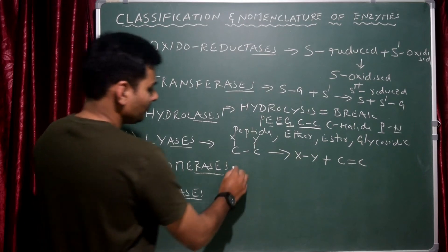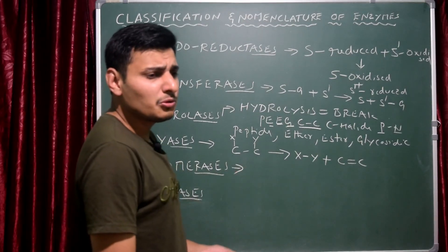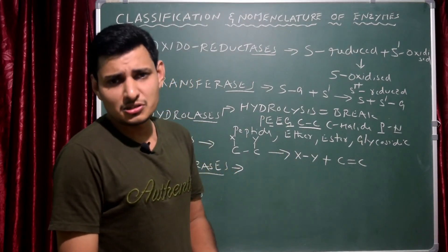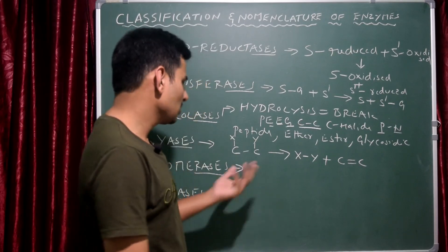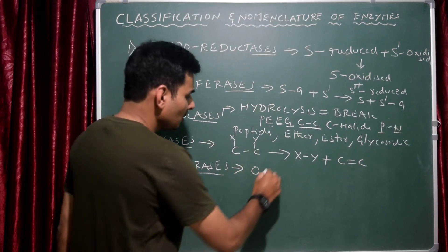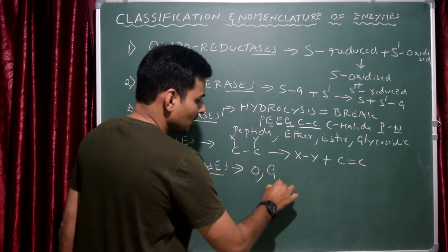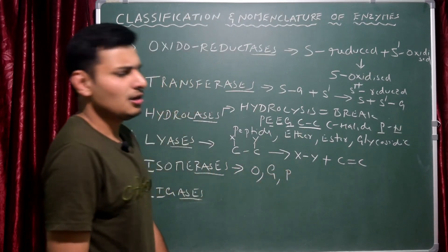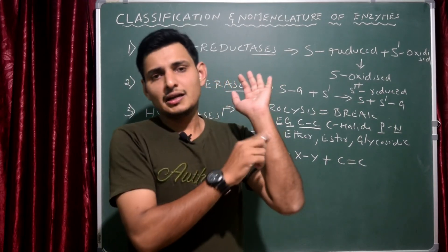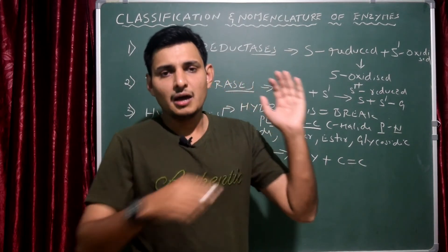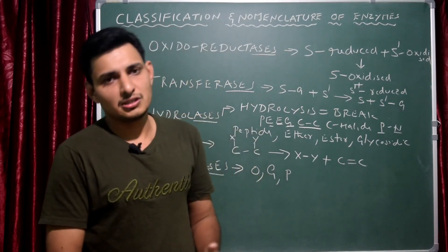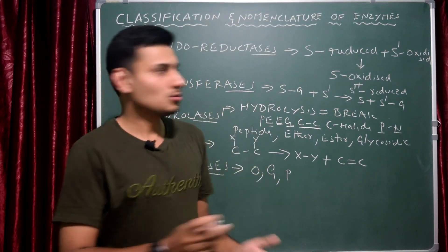Isomerases — they bring the interconversion of isomers like optical isomers, geometrical isomers, and positional isomers. So in short, optical, geometrical, and positional isomers. For example, if I have the groups H and CH3, an isomerase enzyme will shift their positions, converting one isomer to another.